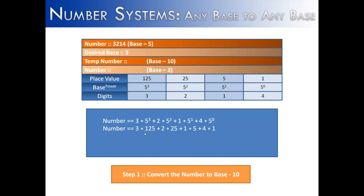And when we break that out into the non-exponent form, we get 3 times 125, 2 times 25, 1 times 5, and 4 times 1. Then we add those numbers together, 375 plus 50 plus 5 plus 4.